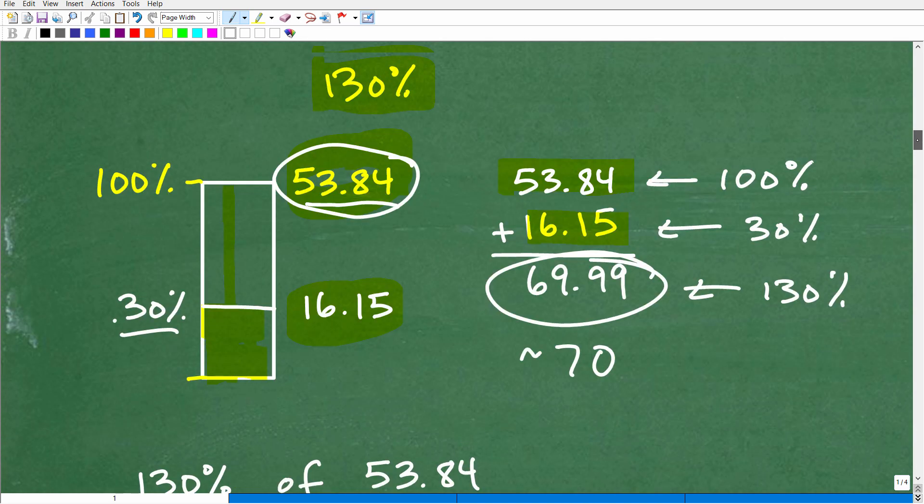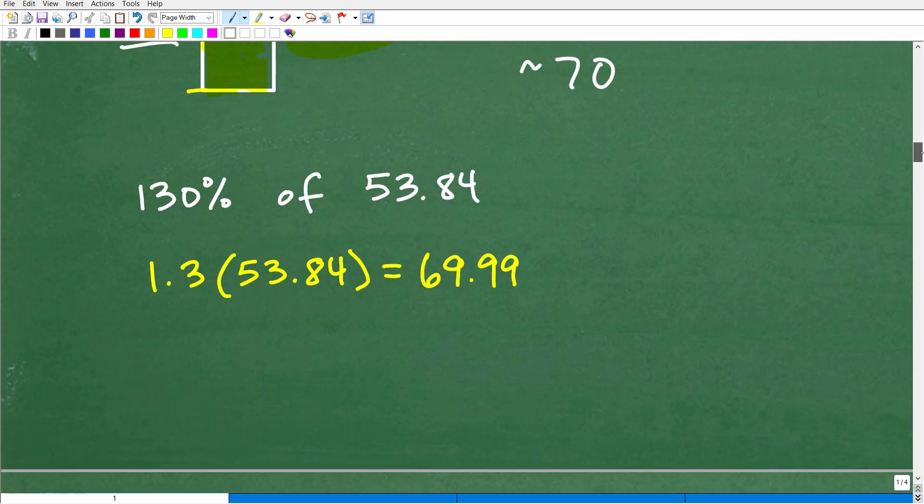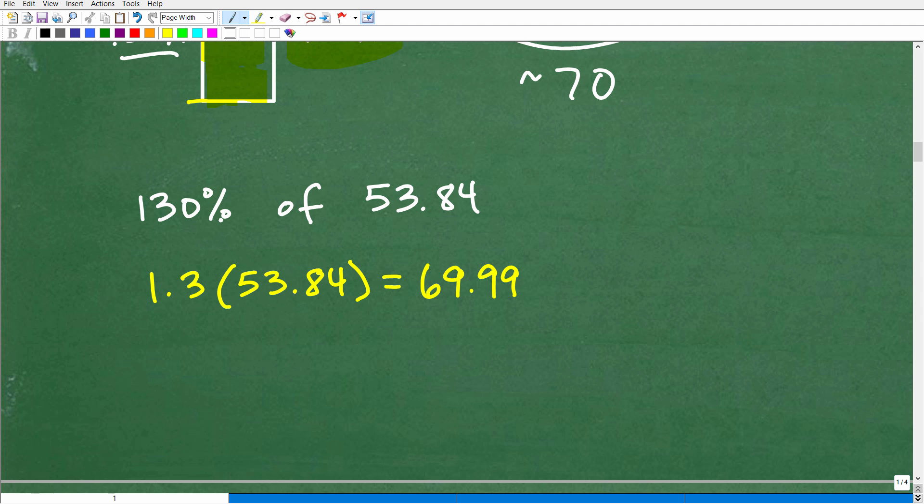Now, I'm breaking it out this way just to kind of conceptually show you how to work with percents over 100. But now, let's go ahead and check this more directly. If I wanted to verify that 130% of 53.84, if I wanted to find the answer, remember, I'm going to take this percent and convert it to a decimal by moving the decimal point two places to the left. So that's going to be 1.3, and then I will multiply by the number I'm trying to find a percent of.